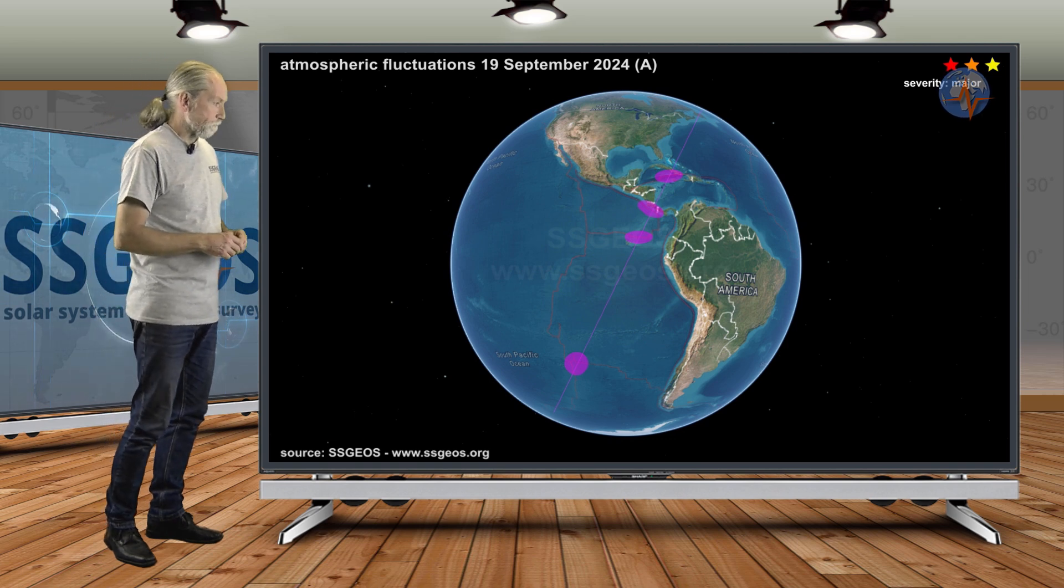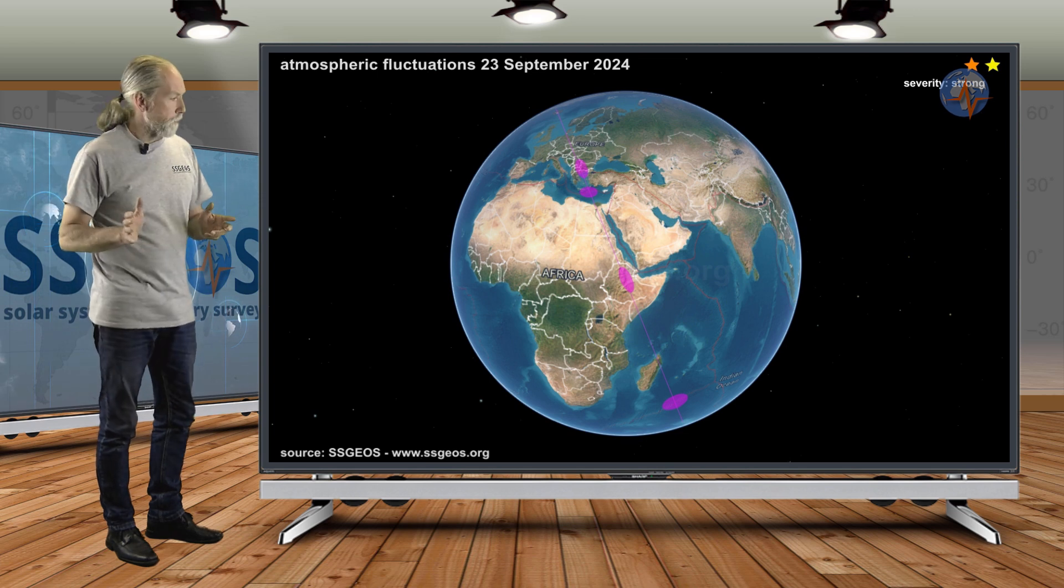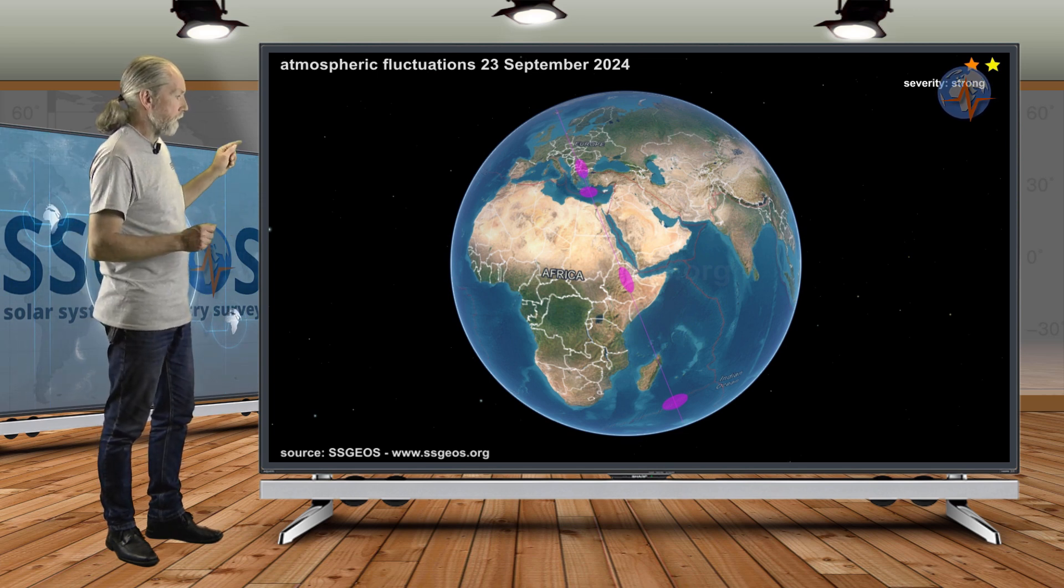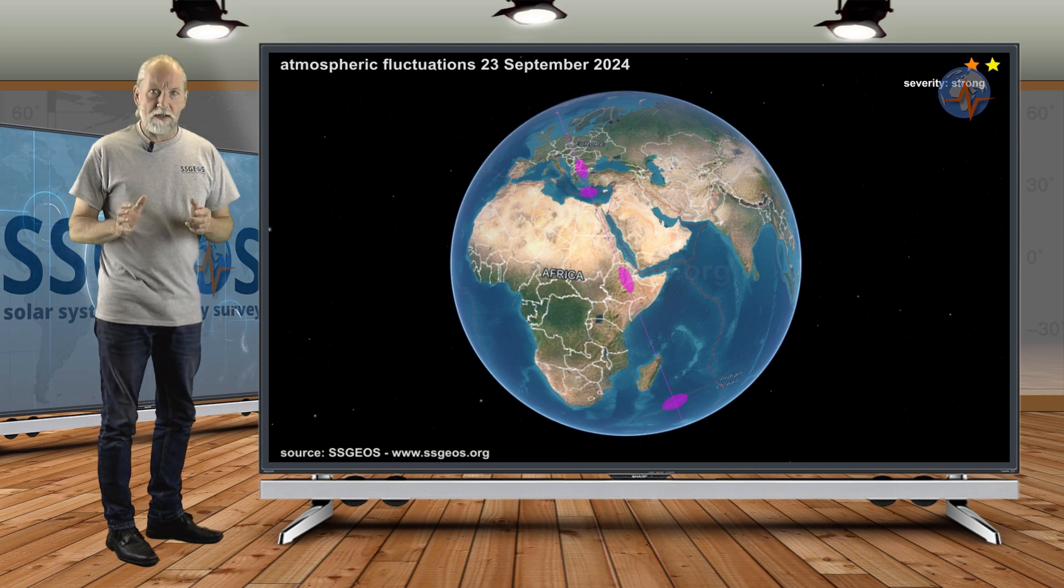Then on the 23rd we also had fluctuations. Again, it wasn't all that much. We see fluctuations over the Eastern part of Africa south of Madagascar, and we did have some seismic activity there. It was in the higher four magnitude range near Madagascar, actually.